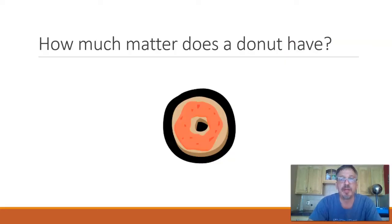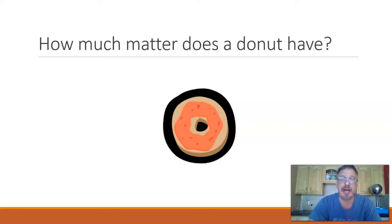Let's go to a donut now. Would you say a donut has a lot, medium, or small amount of matter? Again, it depends on what you're comparing it to. If you compare a donut to an elephant, it has very little matter. But if you compare a donut to a grain of sand, then it has a lot or a medium amount of matter. As long as you justify your response and said it was made of at least some matter, you were correct.